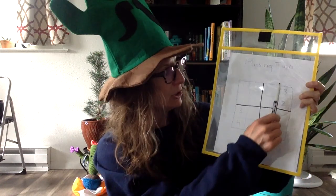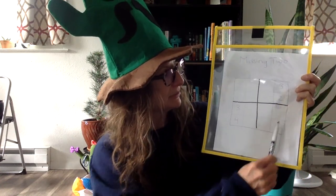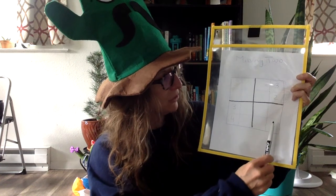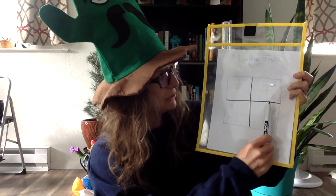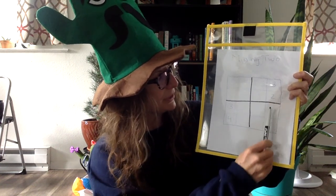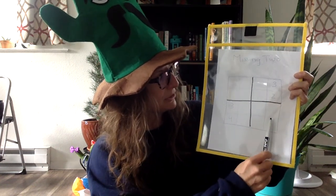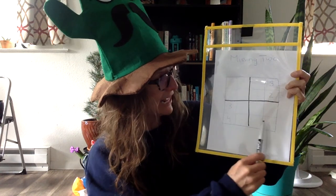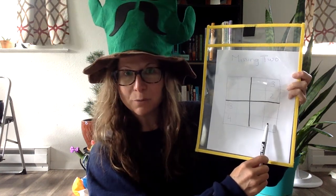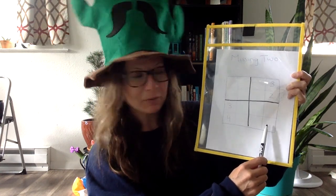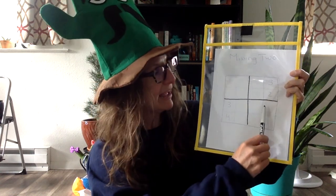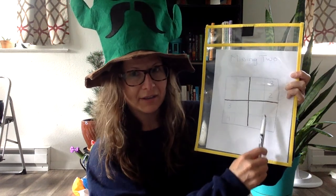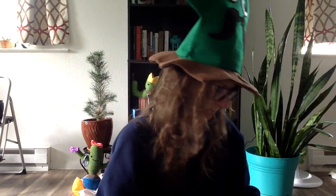Instead, I'm going to look at this column here. I'm also missing a 1 and a 4. The 1 could go here or here, but the 4 can't go here because there's already a 4 there. So I know the 4 has to go here, and the 1 has to go there.